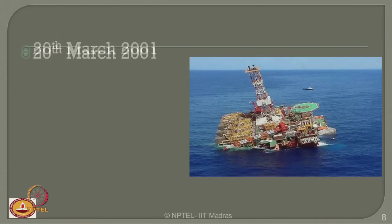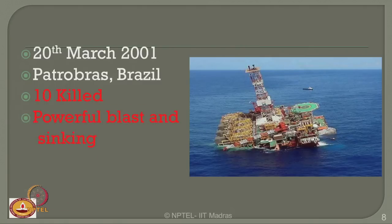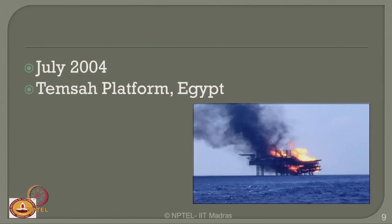Another accident happened on 20th March 2001 — Petrobras, Brazil. Ten people were killed on board and a powerful blast and sinking occurred. The next accident occurred in July 2004 on the Themis platform in Egypt. Interestingly, all 150 people were saved — this is a very classical example where accidents could occur but people can save their lives.